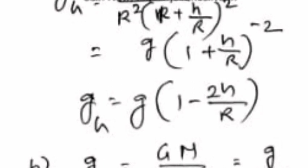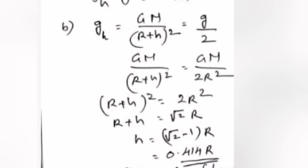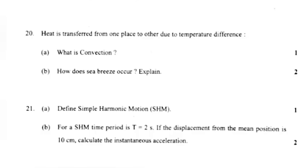For g h equals g by 2: GM by (r plus h) squared equals GM by 2r squared. This gives r plus h equals root 2 times r. Therefore h equals (root 2 minus 1) times r, which equals 0.414 r.